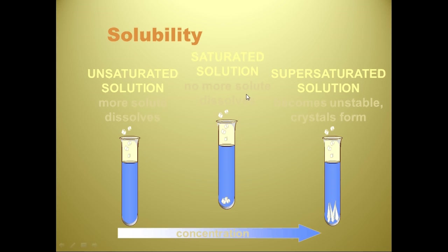A saturated solution means no more solute will dissolve. When making Kool-Aid or iced tea, we'd mix it up and add sugar until we reached just the right amount — if we added a little bit more, it wouldn't have dissolved and we'd have crystals at the bottom. We made sure there were no crystals at the bottom, because if there are no crystals, Mom doesn't ask any questions.